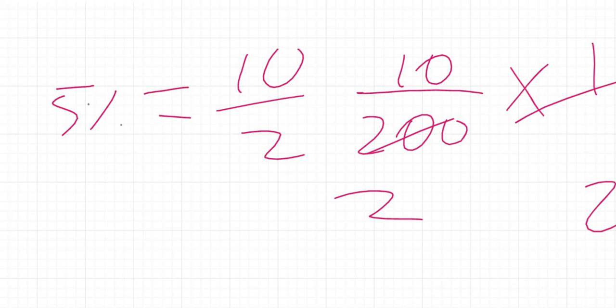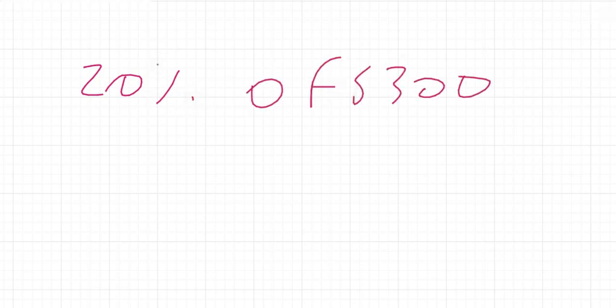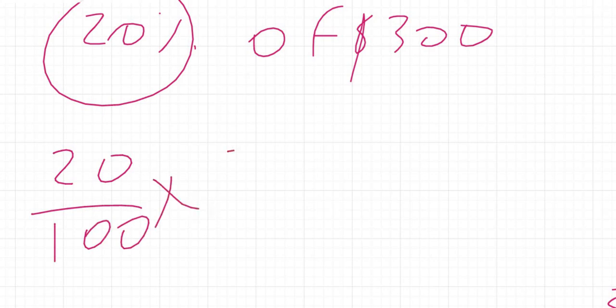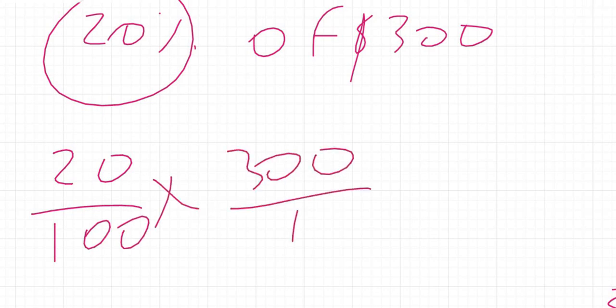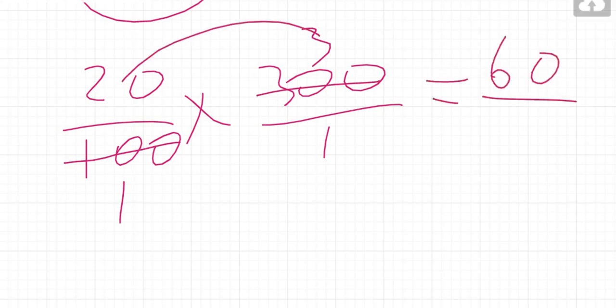Let's look at another example. If I have three hundred dollars and I spend twenty percent of it, I write this as 20 over 100 times 300. We reduce the fraction: 100 goes into 300 three times. So we have 20 times 3 divided by 1, which gives us 60. You would have spent sixty dollars out of three hundred dollars.